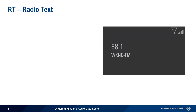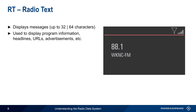Radio text enables messages of up to 32 or 64 characters to be displayed on the receiver. This is most often used to show program information, headlines, URLs, phone numbers, advertisements, etc.